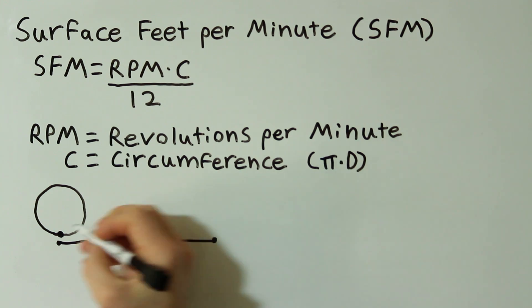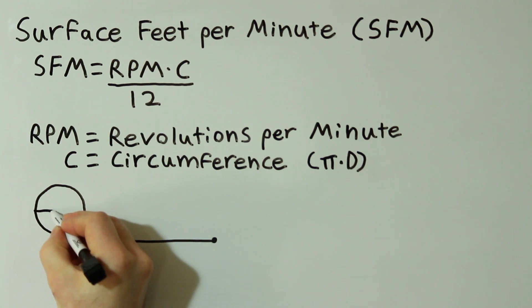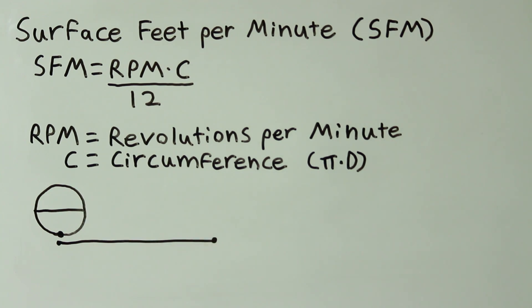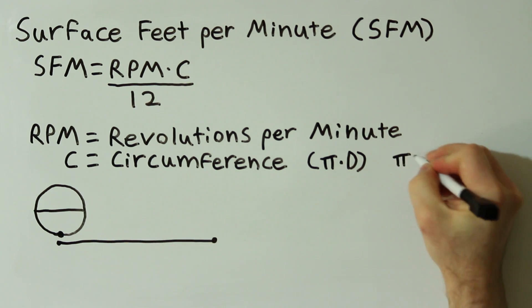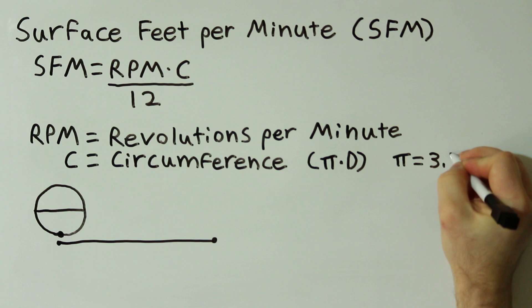The diameter is the distance from one end of the circle straight across the middle to the other end. The rounded value for pi is 3.14.